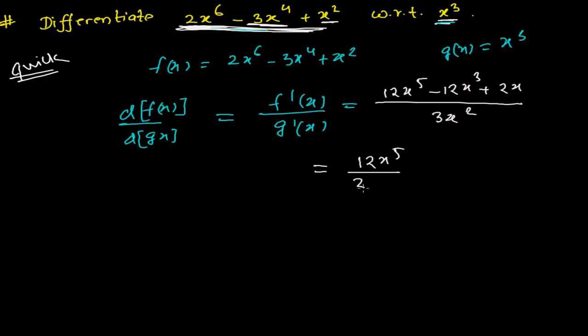You'll get 12x^5/(3x^2) - 12x^3/(3x^2) + 2x/(3x^2). So your answer is going to be 4x^3 - 4x + 2/(3x). This is your answer. This is the shortest method, the quickest method. Just write derivative of this and write the derivative of this, two places, divide by this, you'll get the answer.